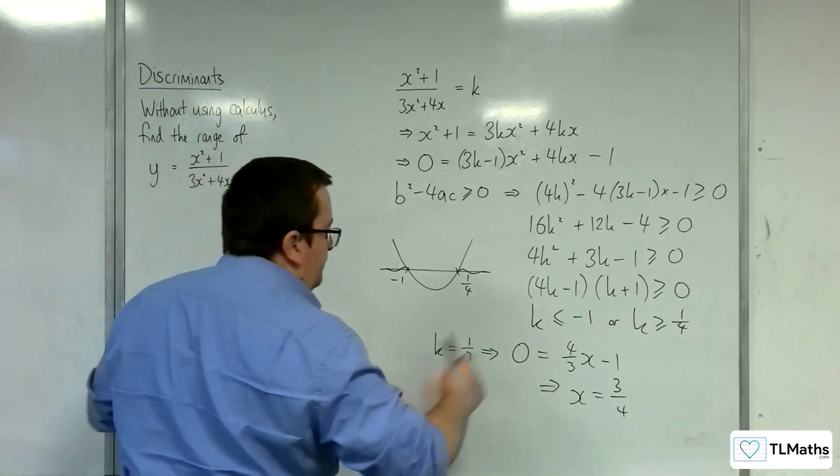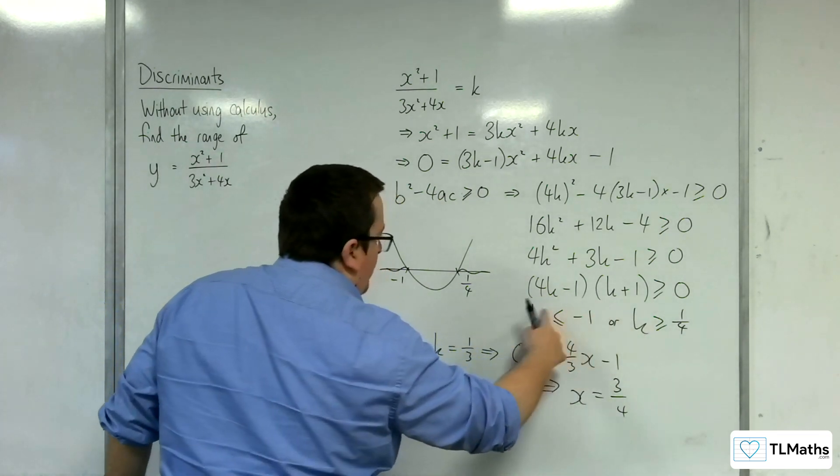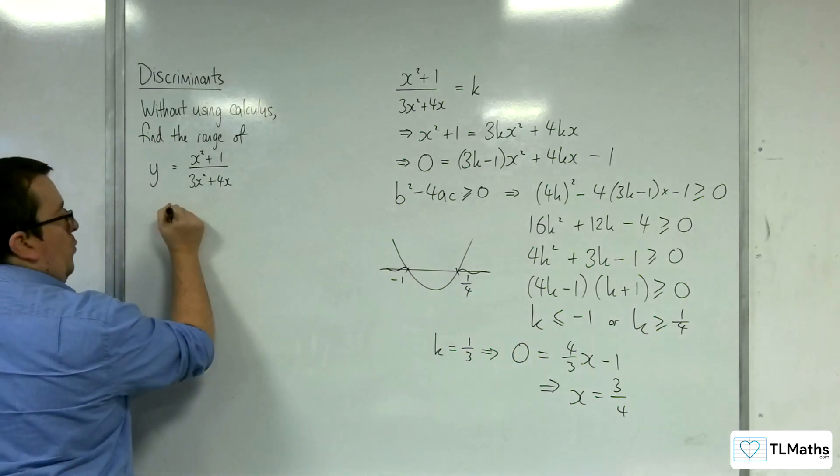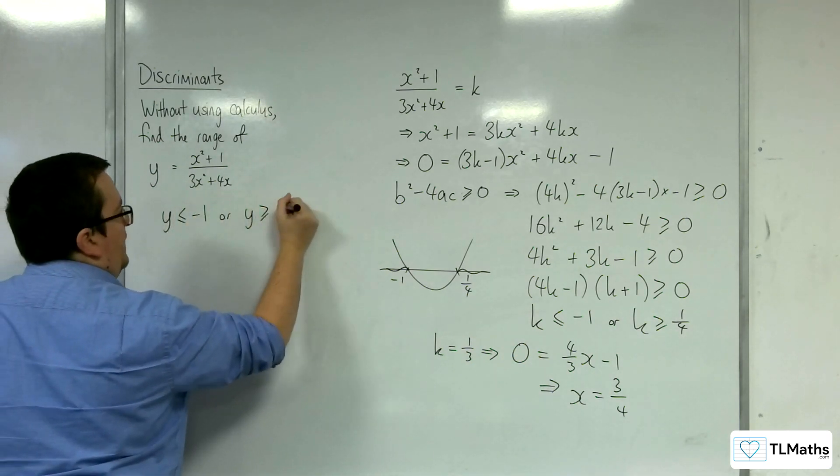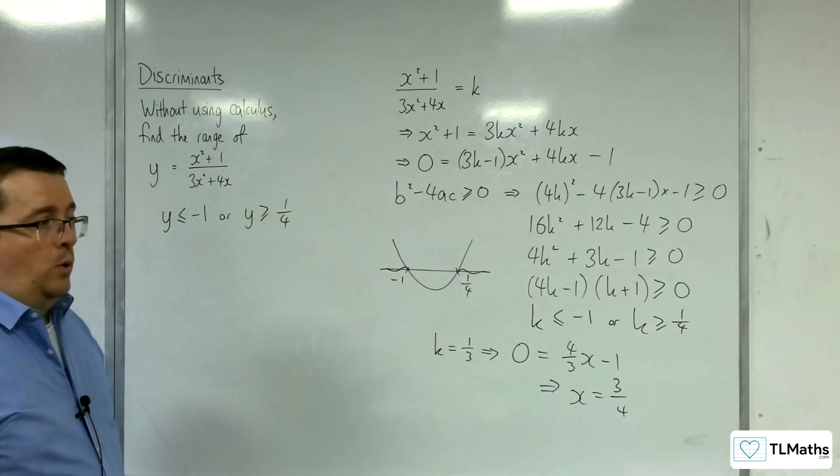So what that's telling me then is that this is our effective range. So y is less than or equal to minus 1, or y is greater than or equal to 1 quarter. So that's as an inequality.